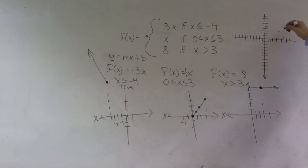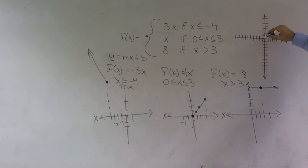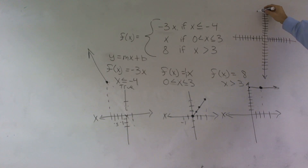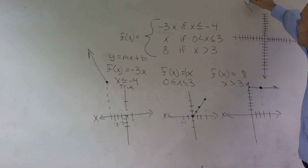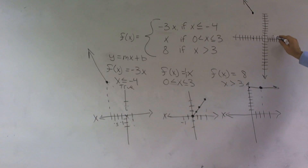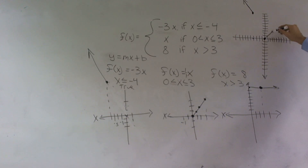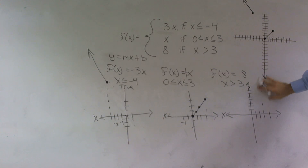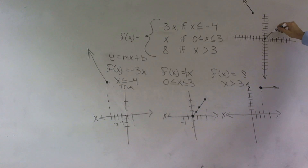So this first piece goes to negative four, and it went up three over one — up three over one, up three over one, up three over one. The second piece was from zero, up three. The third one goes over three.